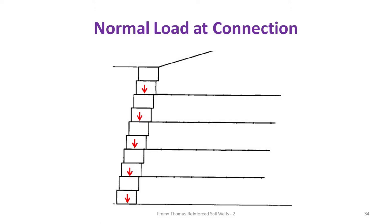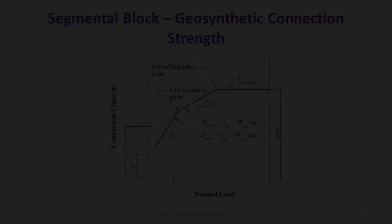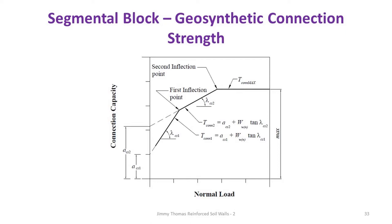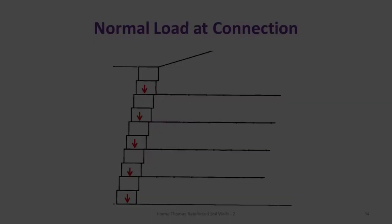In actual design, for a given reinforcement layer I first calculate the normal load — which is the weight of the blocks above that layer. Then I go to the connection capacity diagram, find the connection capacity for that normal load, and compare it with the tension at the connection. The capacity with a factor of safety should be greater than the applied load.